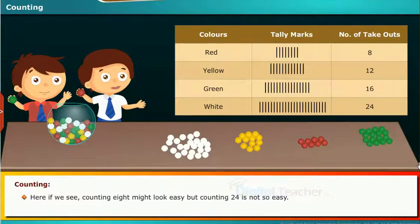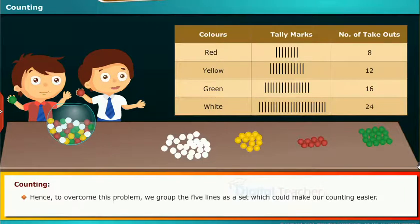Here if we see, counting 8 might look easy but counting 24 is not so easy. Hence, to overcome this problem, we group the 5 lines as a set which could make our counting easier.